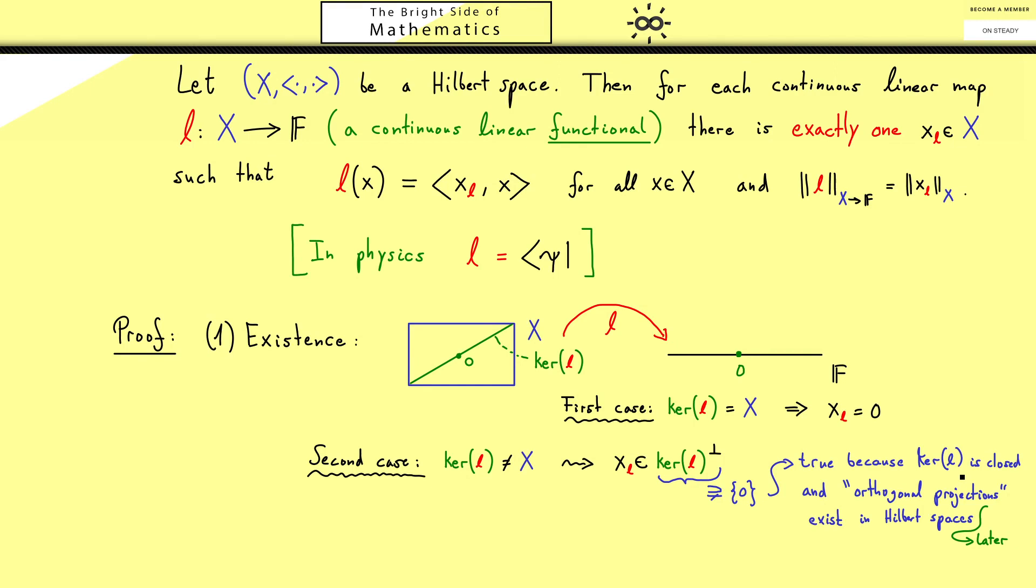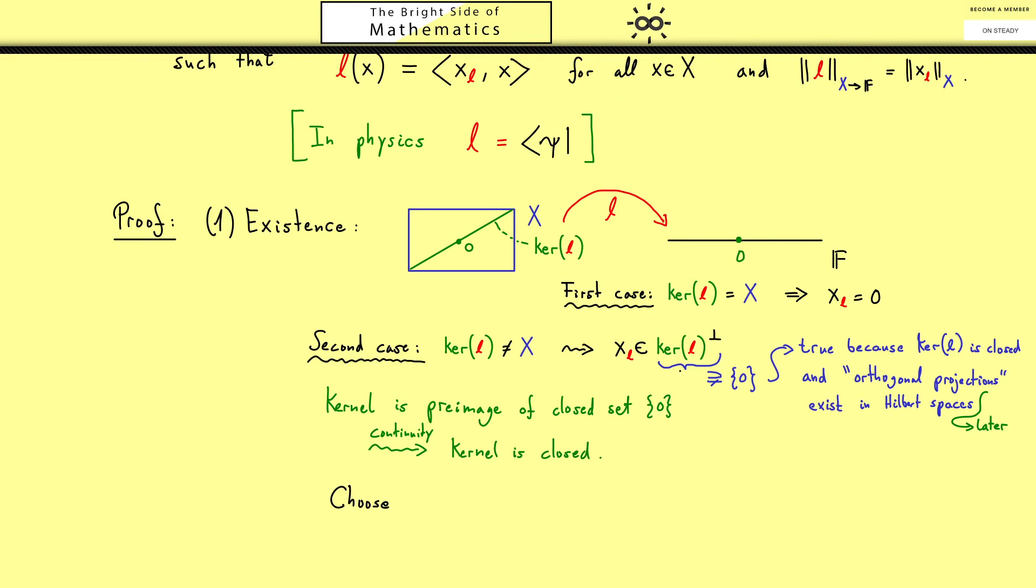However what we immediately can see is that the kernel has to be closed. Namely that is because it's the pre-image of a closed set, the 0 vector, and the continuity tells us the pre-image is also closed then. Please recall continuity means the pre-images of open sets are open, however with the complements that translates to the closed sets as well. Now finally we have all the ingredients to define our vector xL.